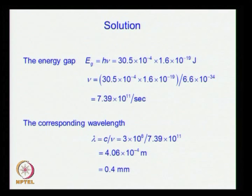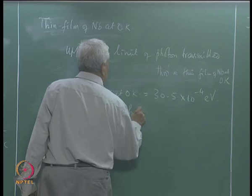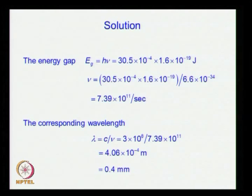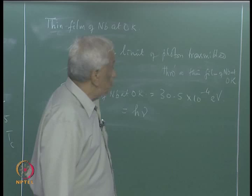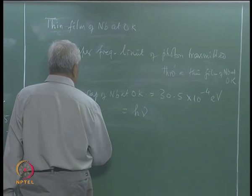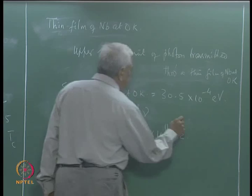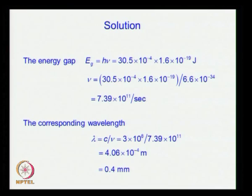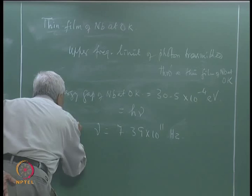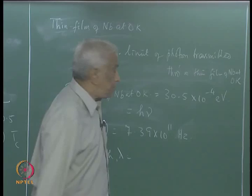We are given this energy, and we simply set it equal to hν. So the upper frequency limit equals the energy gap divided by Planck's constant h. The upper frequency limit works out to a value in gigahertz, and the corresponding wavelength works out to be 0.4 millimeters, which is in the microwave range.